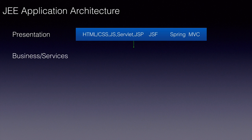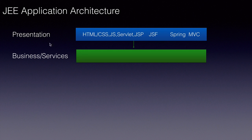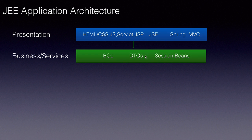The presentation layer uses the services provided by the next layer below it, which is the business layer or the services layer. This is where we code all our business logic for our application. We create plain Java objects and also DTOs, which stand for data transfer objects, to share data across our layers. We also have the option of using session beans at this layer, which is from the EJB standard of Java EE, instead of creating simple Java classes.